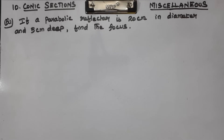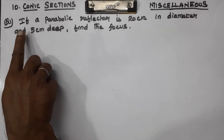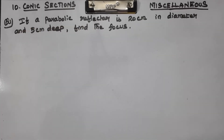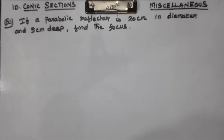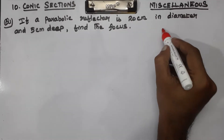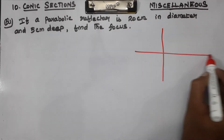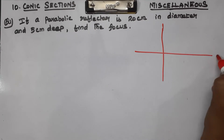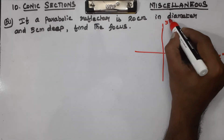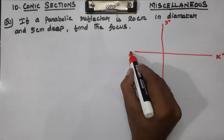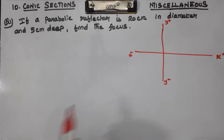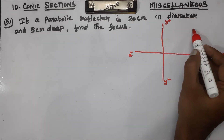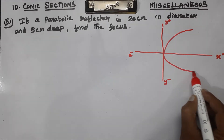This is the x-axis — x-positive, y-positive, x-negative, y-negative. Now we know the Parabolic Reflector. This is the Parabola Equation.